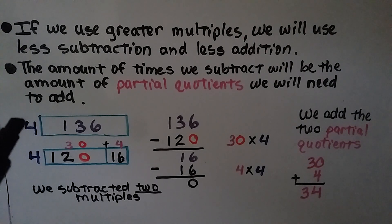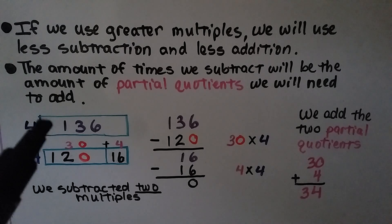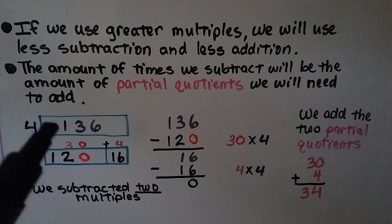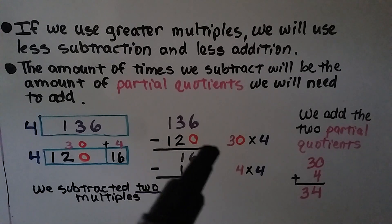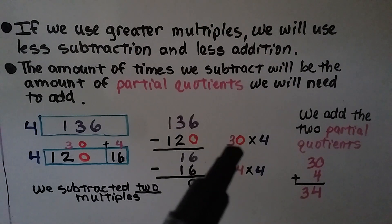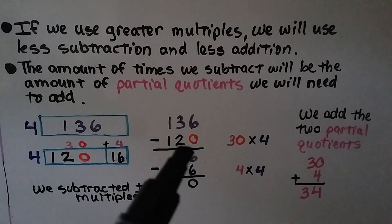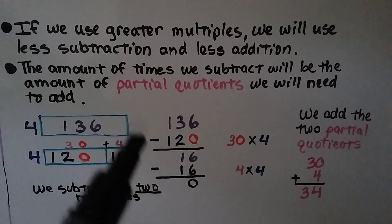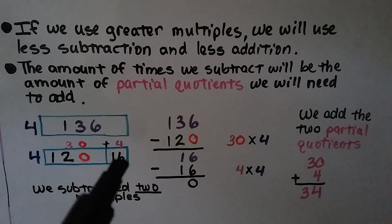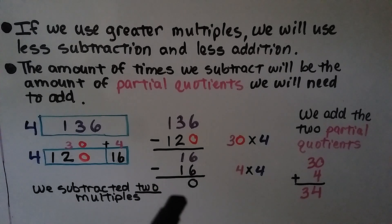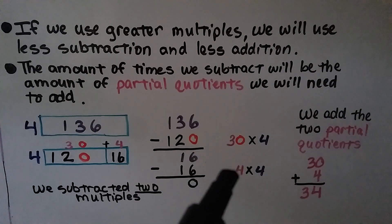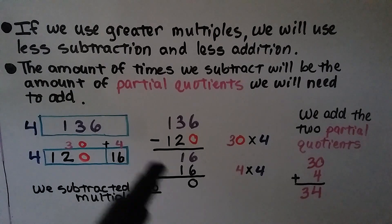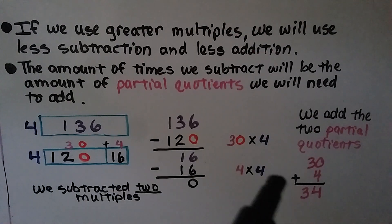We had 136 divided by 4. Using the rectangular model with 136 inside, we think: 4 times 3 is 12, so if we add a 0 to make it 30, it will be 120. We can take that away right away, leaving 16. And 4 times 4 is 16 — we take that away and have 0. Our partial quotients are 30 and 4, so we only had to subtract 2 times with only 2 partial quotients, because we used a much larger multiple of 4.